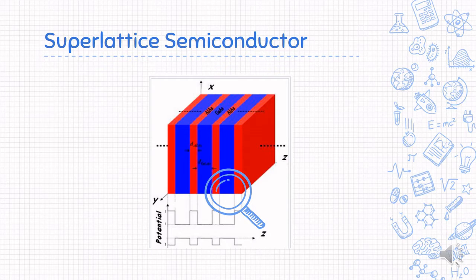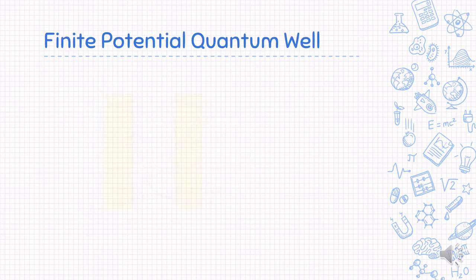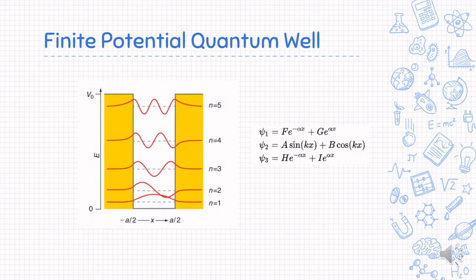Superlattice is a periodic structure of layers of two or more materials with only several nanometers thick. With superlattice, you can create multiple quantum wells of different sizes within the material because each layer is quantum sized. The quantum wells have finite potential barrier, meaning that the electron wave function exists outside each well.